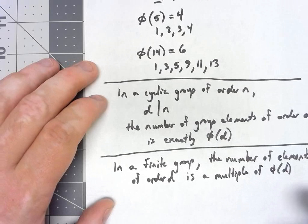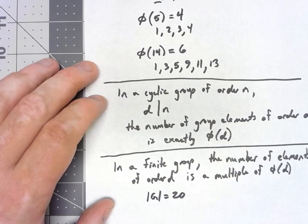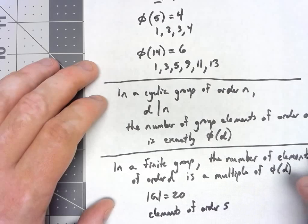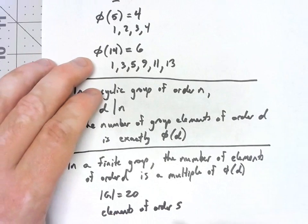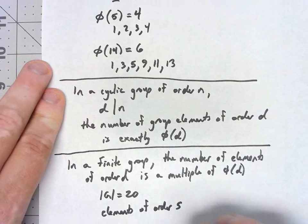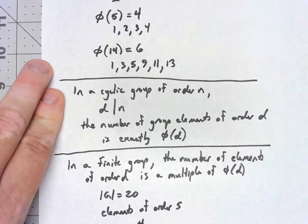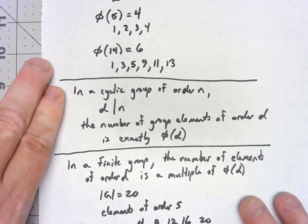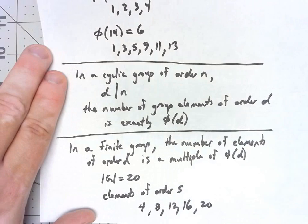So without knowing anything else about a group, if I had a group of, say, 20 elements, and I wanted to figure out how many elements had order 5, well, we earlier computed that φ(5) was 4. So again, because this isn't a cyclic group, because this is only a finite group, I don't know for a fact that it's exactly φ(5), but there could be 4 elements of order 5. There could be 8, there could be 12, there could be 16, or there could be 20. Now honestly, we can restrict it, and we can actually say that some of those things couldn't happen using other properties, but just from this theorem, we know it has to be one of those things.